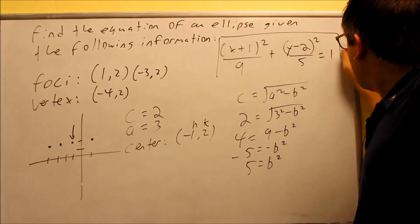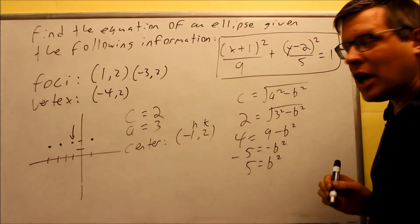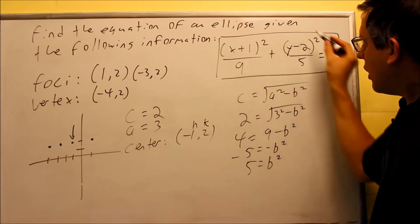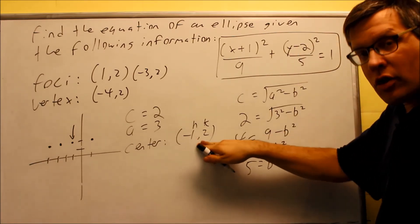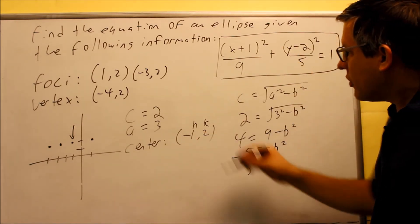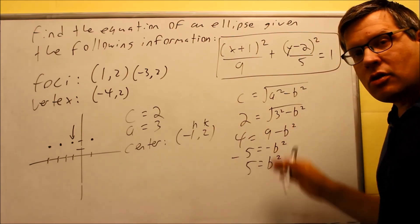So here, this is going to be the answer to that problem now. We have it again centered at negative 1, 2, properly there. We've solved for the a squared and the b squared, so our problem is complete.